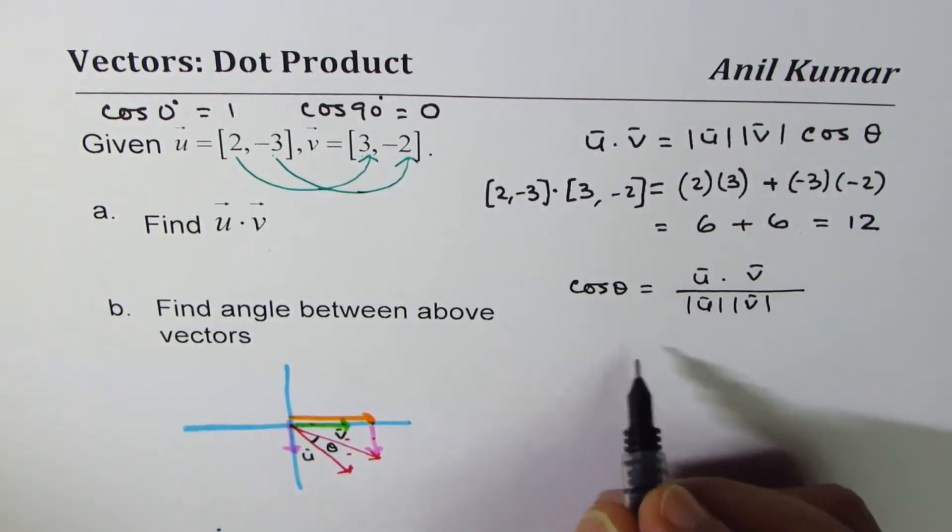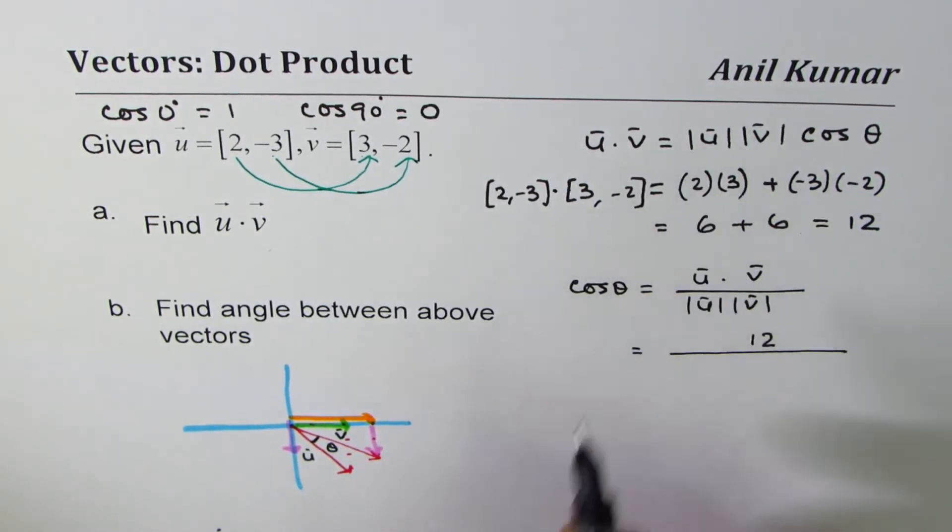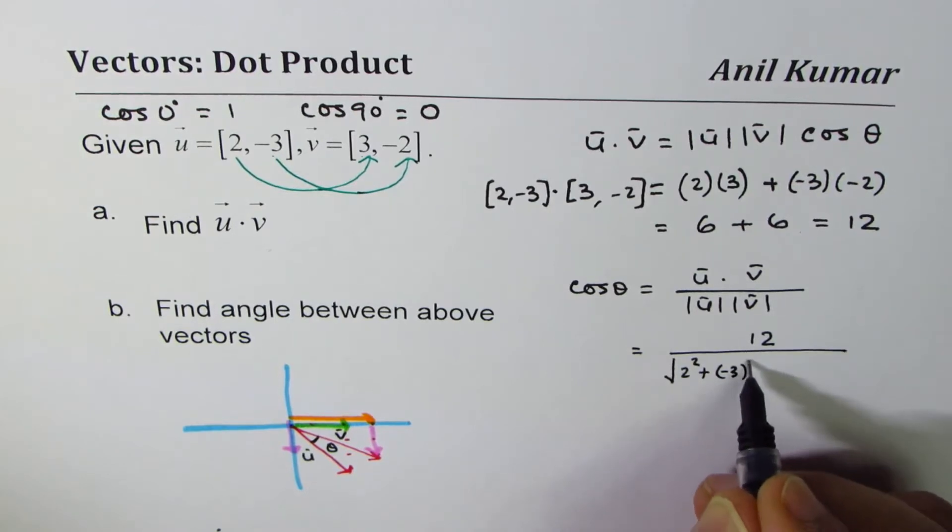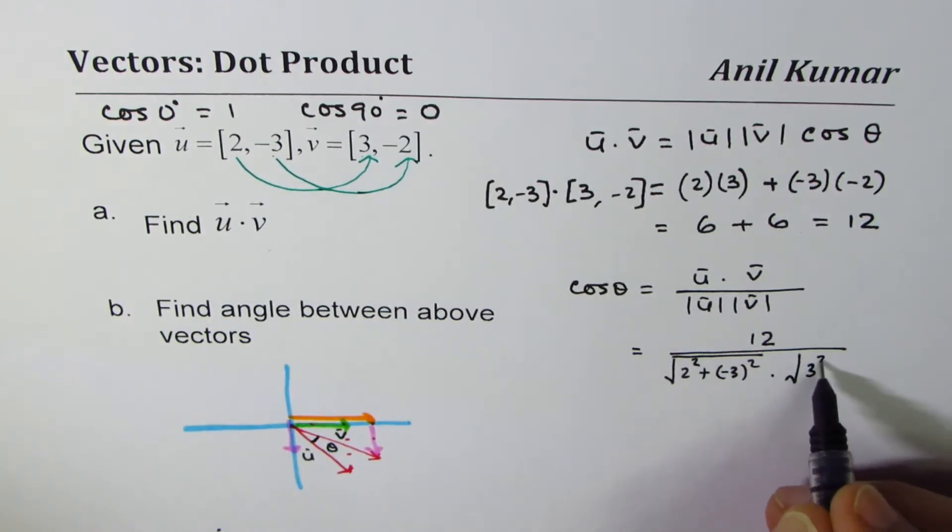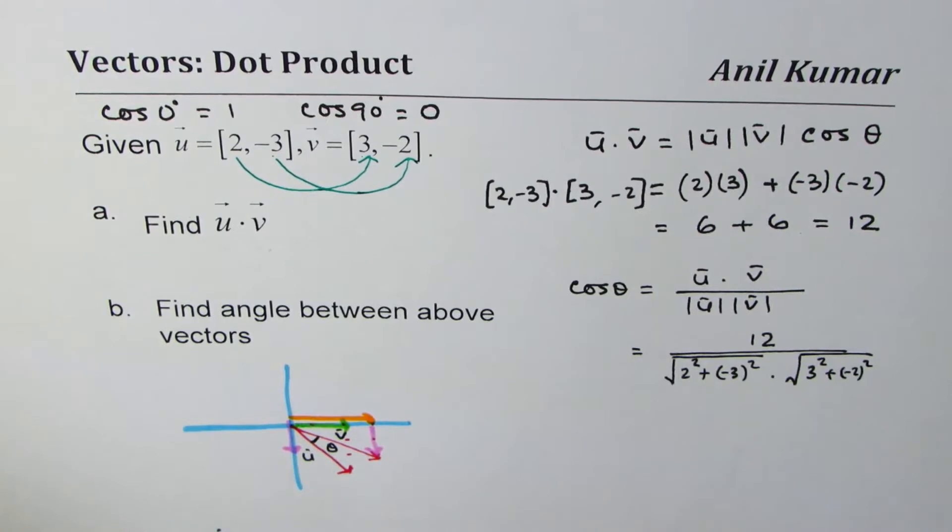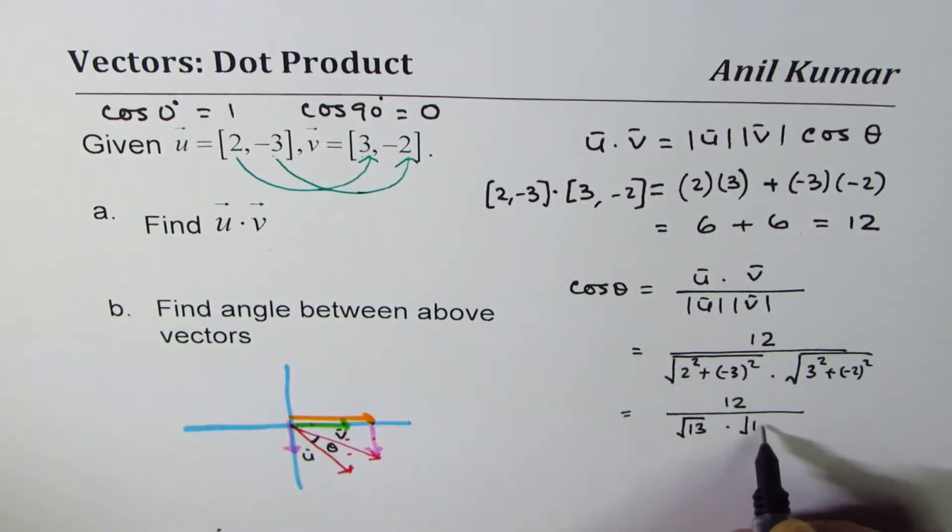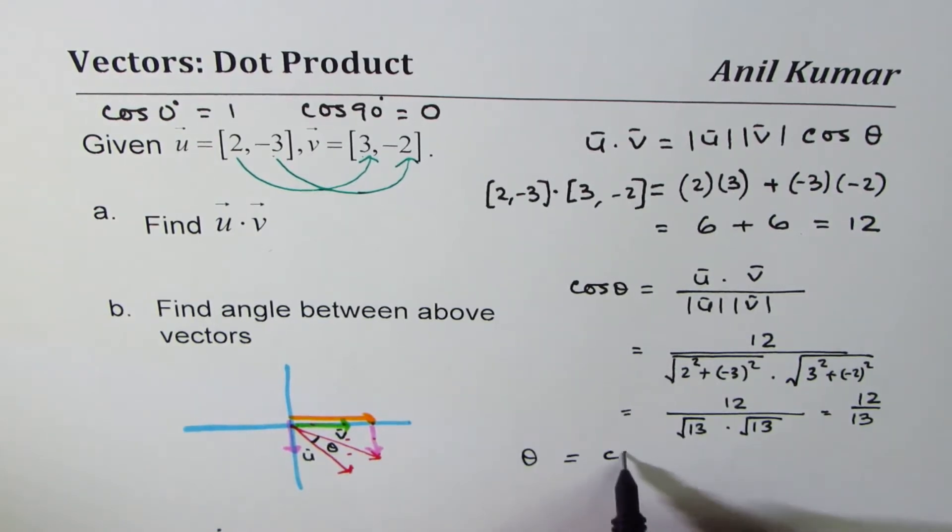u dot v is 12, so we can always write this as 12 divided by magnitude of u, which will be square root of 2 squared plus -3 squared, times magnitude of v which is 3 squared plus -2 squared. Now that gives us 12 divided by 4 plus 9 which is 13, so square root of 13 times square root of 13, which is 12 over 13.